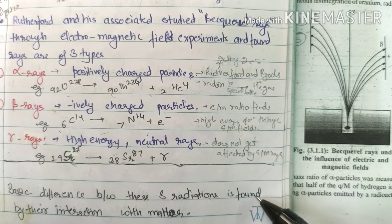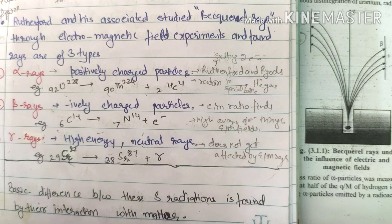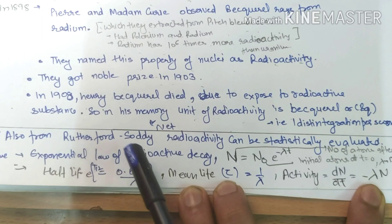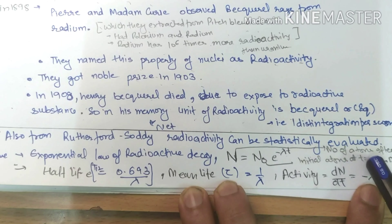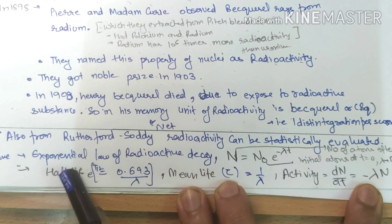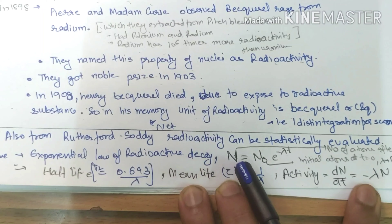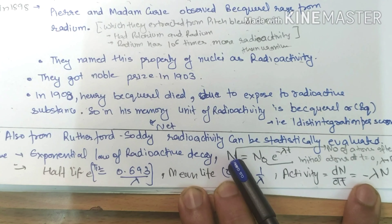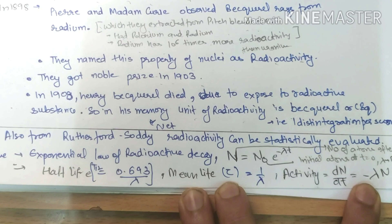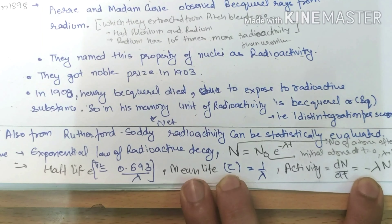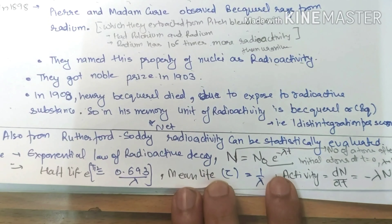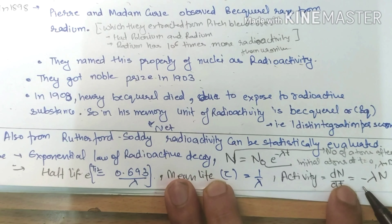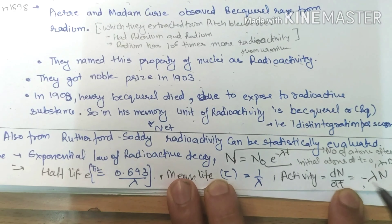The basic difference between these 3 radiations is found by their interaction with matter, which will be our topic for unit 2. Also from Rutherford's study, radioactivity can be statistically evaluated. They helped in the formation of the exponential law of radioactivity: N = N₀ e^(−λt), where λ is the decay constant, N is the number of atoms left in a radioactive substance after time t, and N₀ is the initial number of atoms at t = 0. Also, half-life and mean life are given by their respective formulas, and radioactivity is given by dN/dt = −λN, which is just the differentiation of this exponential term.